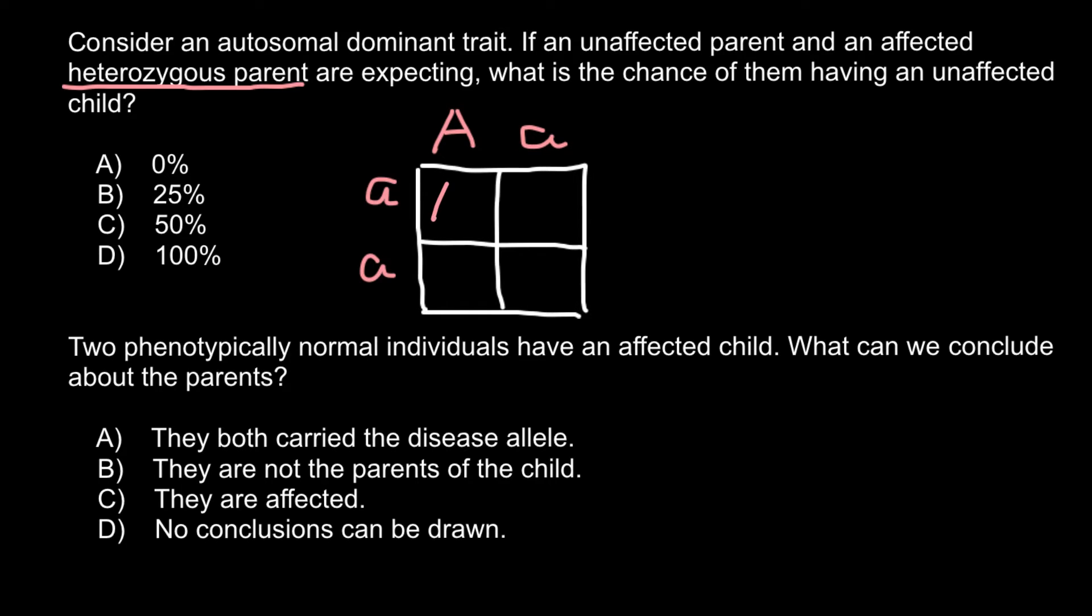When we build a Punnett square, we can predict what are the frequencies of different genotypes possible in this family. So capital A and small a here, small a small a here, capital A and small a here, and small a small a here.